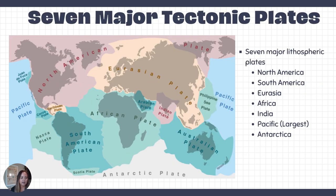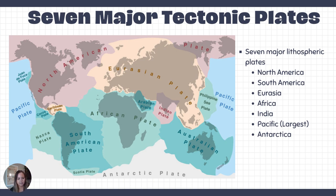There are seven major lithospheric plates: North America, South America, Eurasia, Africa, India, Pacific, and Antarctica. But there are also smaller plates, like the Arabian plate, the Juan de Fuca plate, the Cocos plate, the Caribbean plate, and the Nazca plate. There are a few minor plates that we do see.